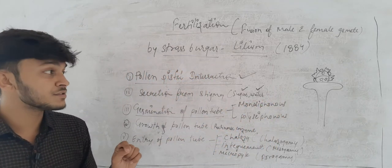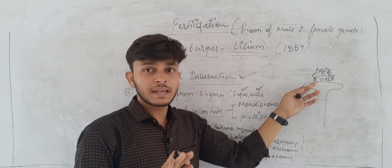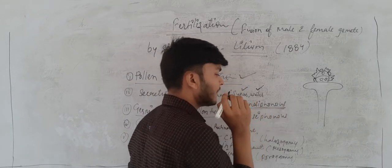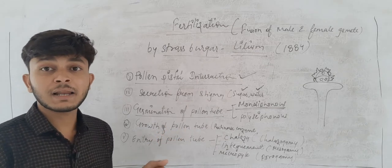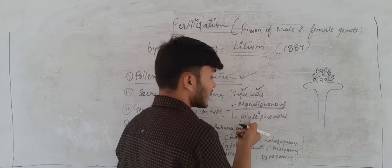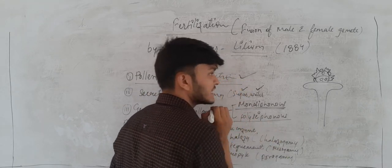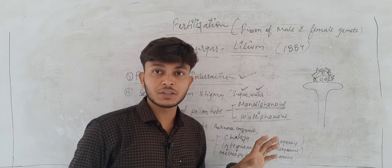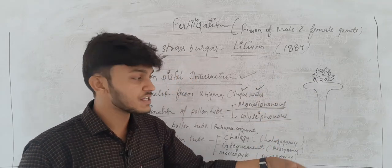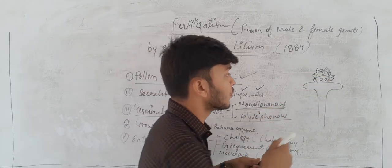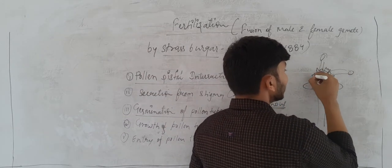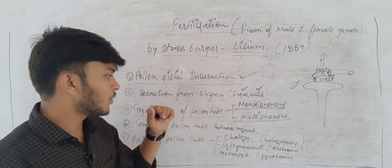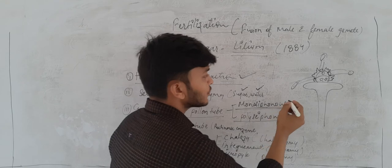In many cases, only one pollen tube is formed. That situation is known as monosiphonous. There are also plants where more than one pollen tube is formed; that situation is known as polysiphonous. In a monosiphonous situation there is no problem — the gametes travel and reach their destination. In a polysiphonous situation, only one functional pollen tube proceeds and the others are destroyed.